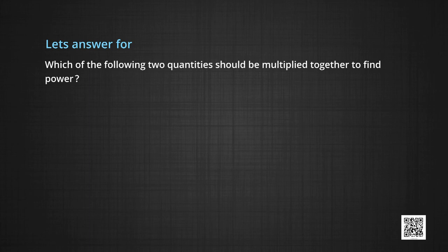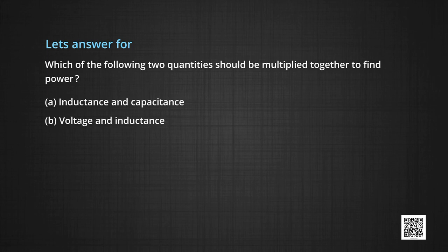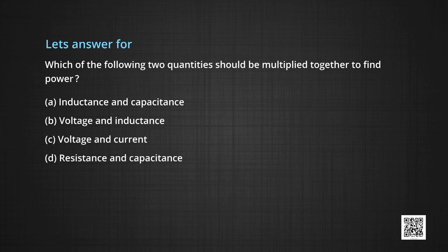Here is a practice problem: which of the following two quantities should be multiplied together to find power? Options: inductance and capacitance, voltage and inductance, voltage and current, or resistance and capacitance. The correct answer is voltage and current. Many more problems based on this module will be solved in the MCQ and problem-solving section.